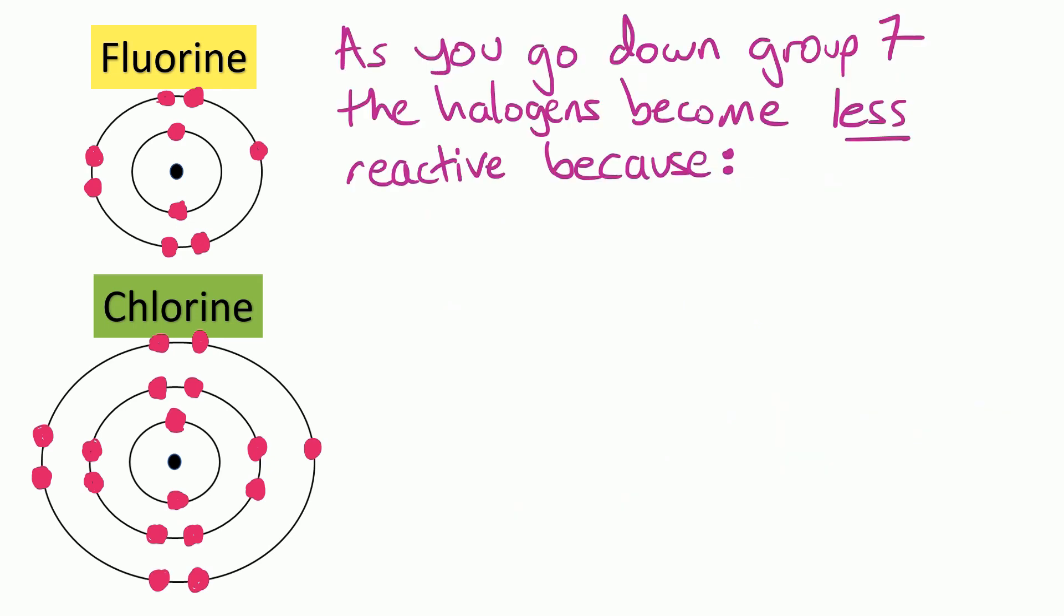So as you go down group 7 the halogens become less reactive. And once again we can explain that by thinking about their electronic structures. As you can see, the atoms are getting bigger as we go down the group from fluorine to chlorine. Or you could say they have more shells. It's important you don't just say more electrons in an exam question, because technically they could have more electrons on a shell without the atoms getting bigger and having more shells. So the first point is to say the atoms are getting bigger.